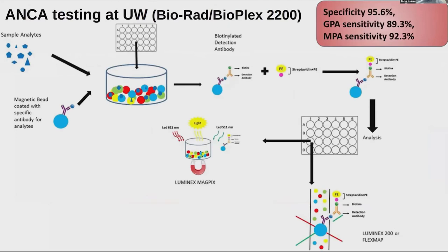The way we measure ANCA at UW is with Bioplex, where you add a sample and then magnetic beads coded with specific antibody for analytes. Then you add a biotinylated antibody to which you add streptavidin coded with phycoerythrin. You pass it through a laser beam — one laser detects the bead, and the other detects the concentration of phycoerythrin, indicating antibody concentration.